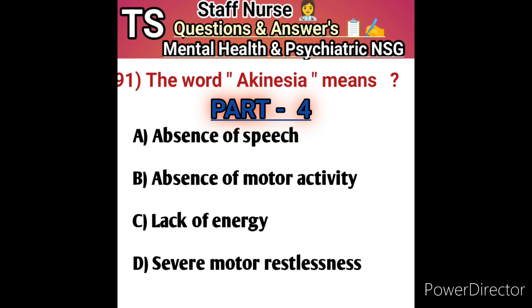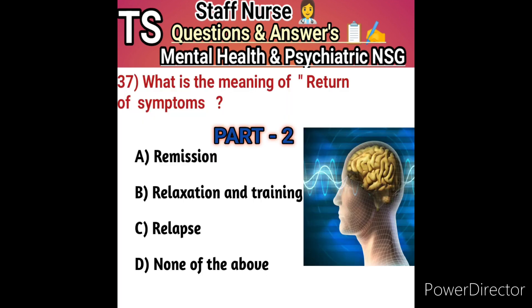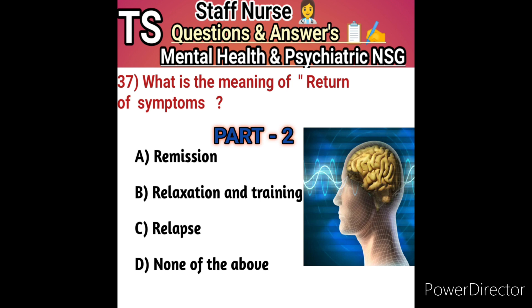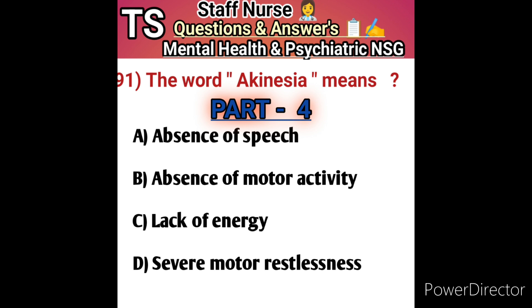This is part four. We already discussed in part one the introduction of mental health nursing and psychiatric nursing, some medical terms, and disorders along with 25 questions. Part two covered 25 questions with psychiatric terms and disorders in detail. Part three also covered 25 questions with detailed explanations. Now in part four, we will cover questions 76 to 100.